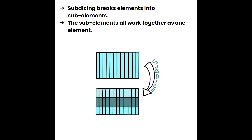Subdicing is the other technique to reduce grating lobes. It breaks elements into sub-elements that all work together as one element. So if a transducer has 12 elements and 12 wires, subdicing physically divides each element into smaller pieces — but it remains 12 wires, not 36, because all sub-elements within one element are still electrically connected to that one wire and act as one element. The different physical cut of the elements changes the interaction of the sound waves produced, thus reducing grating lobes.